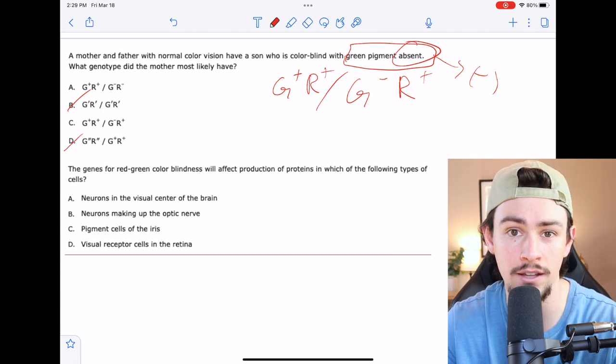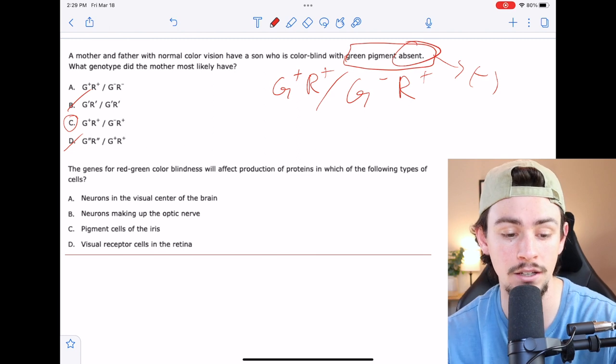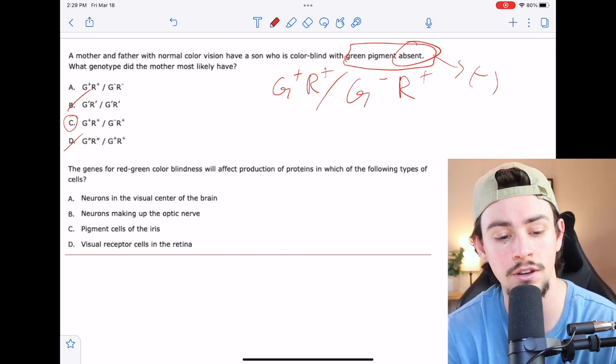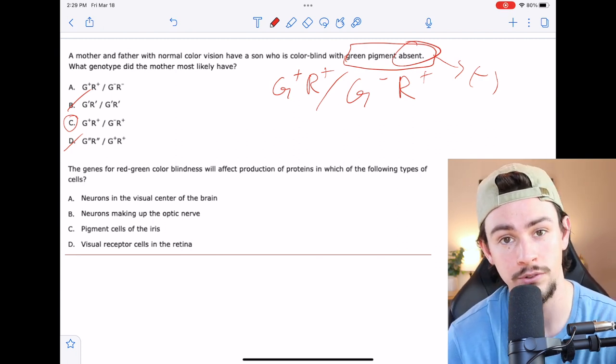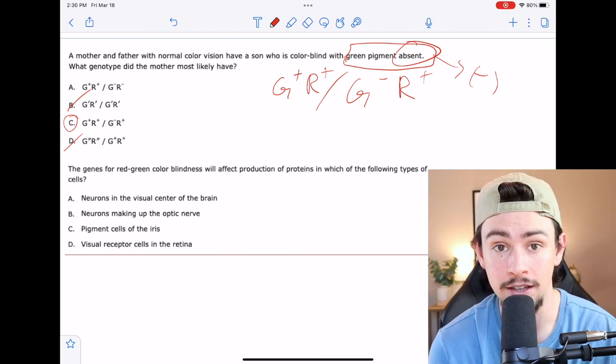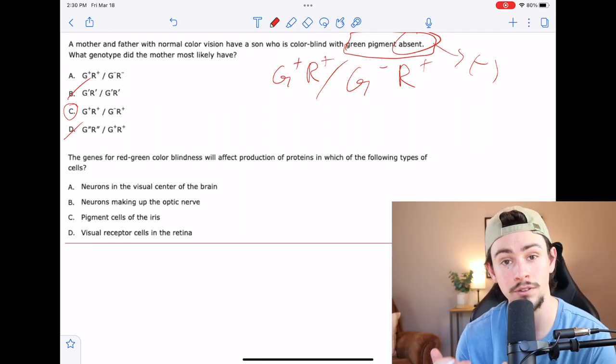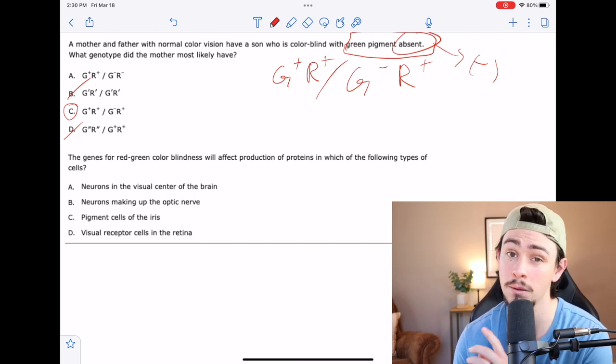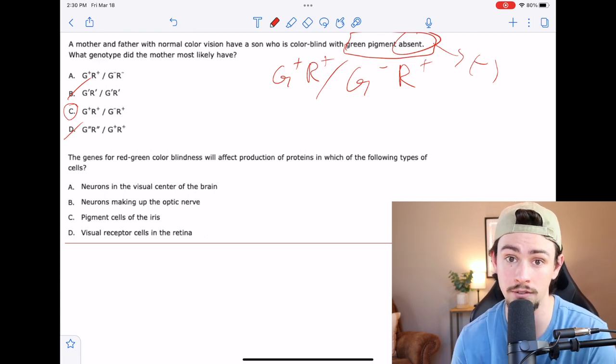That leaves us between A and C. The most likely of those answer choices would be answer choice C. Now this would be a question that in medical school you could challenge, and depending on the type of mood the professor was in, they would probably give you credit for answer choice A and C because it's still within the realm of possibility. But the most likely answer choice is C because it ensures we would still have the presence of red pigment. So it's the safest answer choice. And remember, you're picking the best answer choice, not the only true answer choice when it comes to the MCAT.